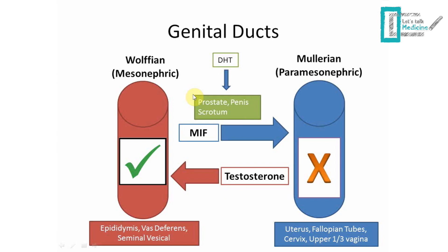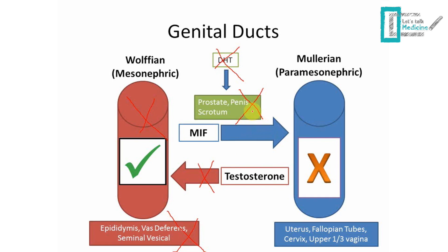Now let's go clinical. Sometimes patients are XY but their testosterone is not functioning — either it's not coming out of the Leydig cells or the receptors aren't responding. So the testosterone effect is gone. The Wolffian duct will die: no epididymis, no vas deferens, no seminal vesicles. Since dihydrotestosterone comes from testosterone, DHT won't work either: no prostate, no penis, no scrotum — instead you get labia majora and labia minora.